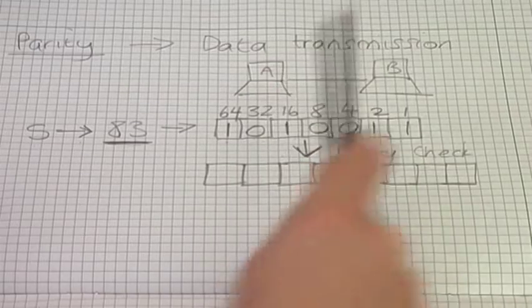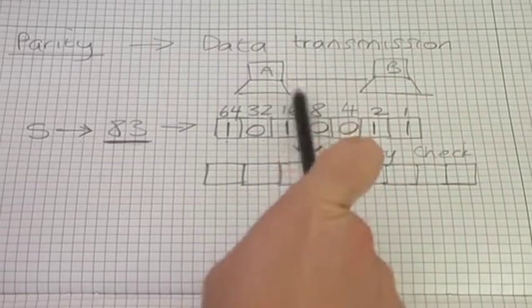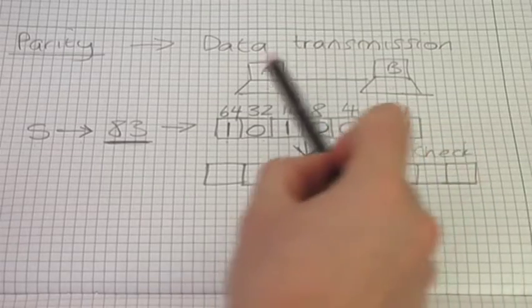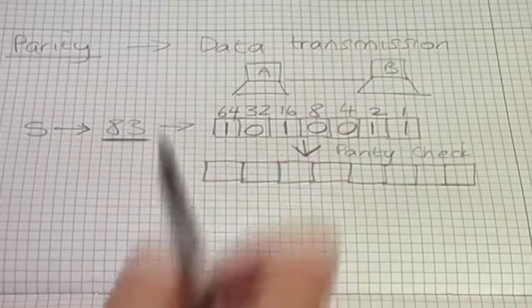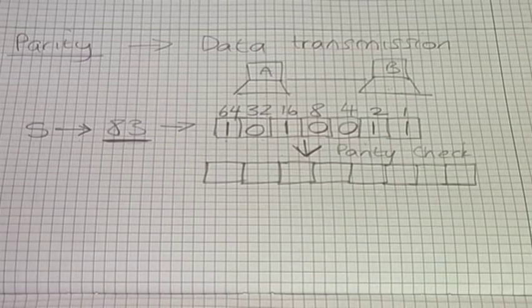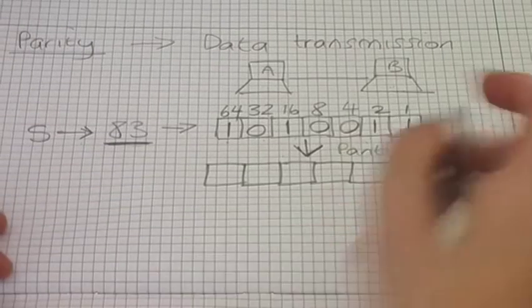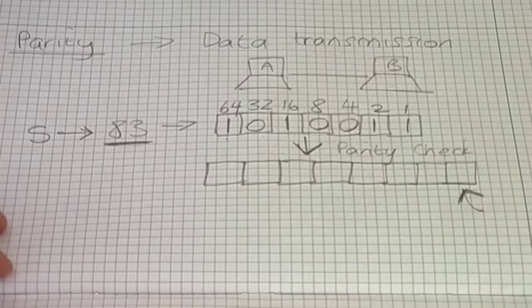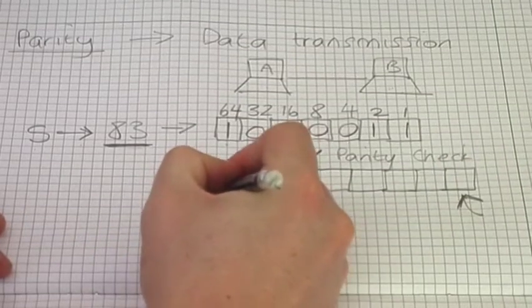This is something that computer A and computer B will need to agree upon. When these two transmit data between them, they will do something called handshaking, and during that handshaking phase they will make all of these decisions. The first decision they need to make is whether they're going to place the parity bit at the back or at the front.